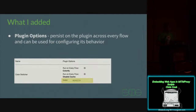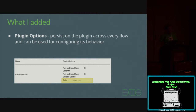I also added plug-in options — persistent options that you can configure. You have different types that you can create. Those configure the plug-in behavior and persist across every flow the plug-in runs across. For example, here we have a color switcher plug-in with a configurable color in the interface.